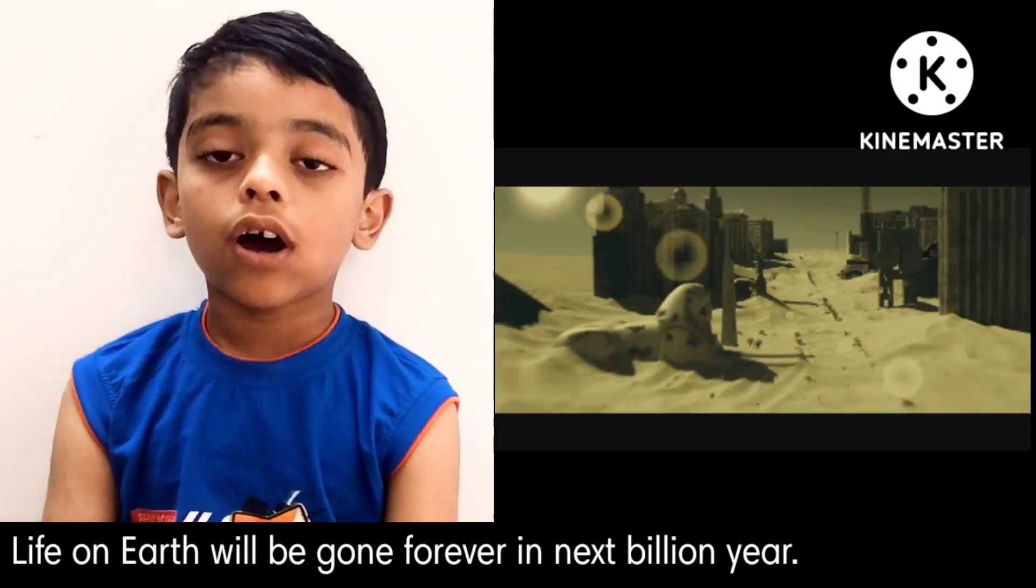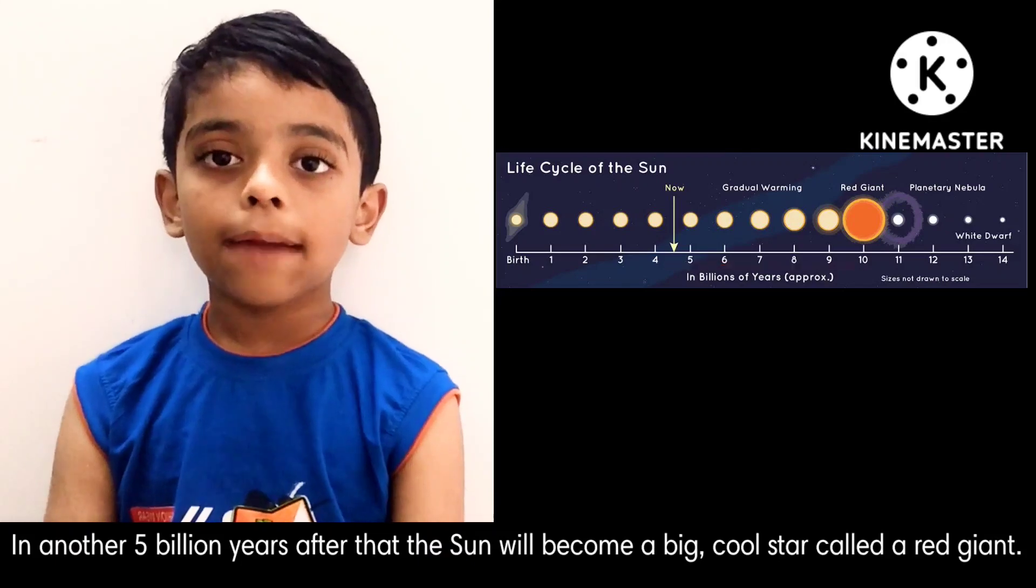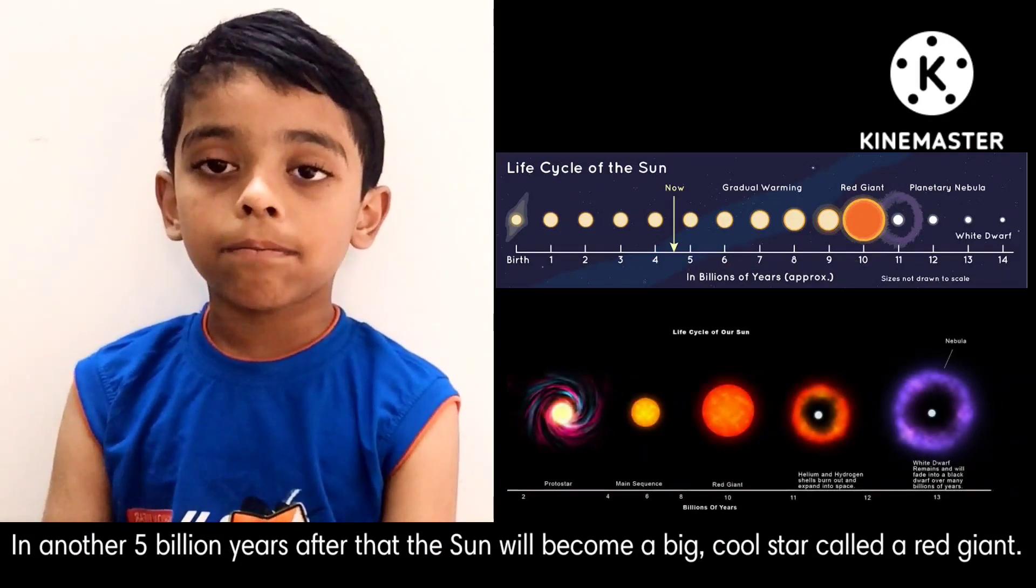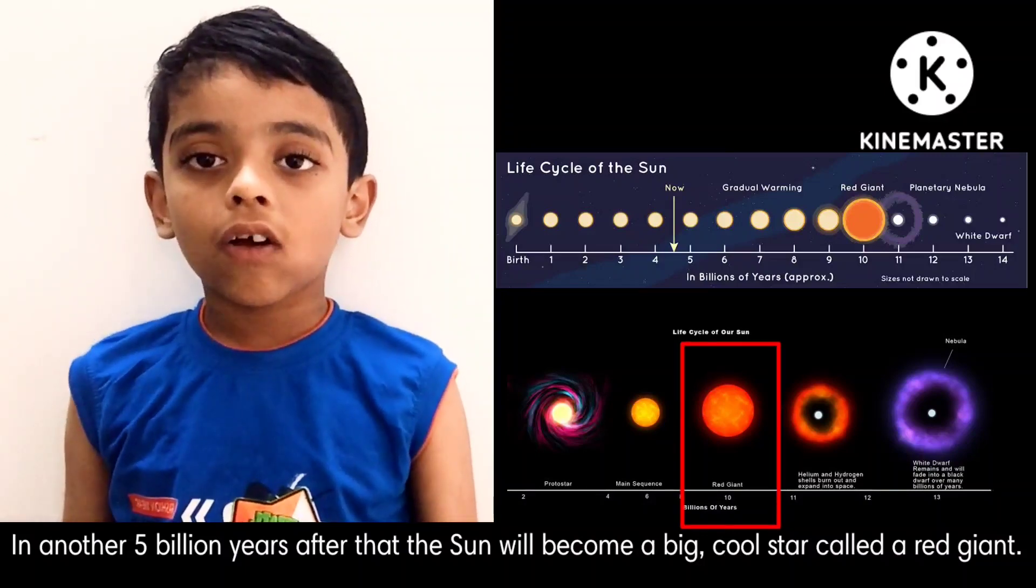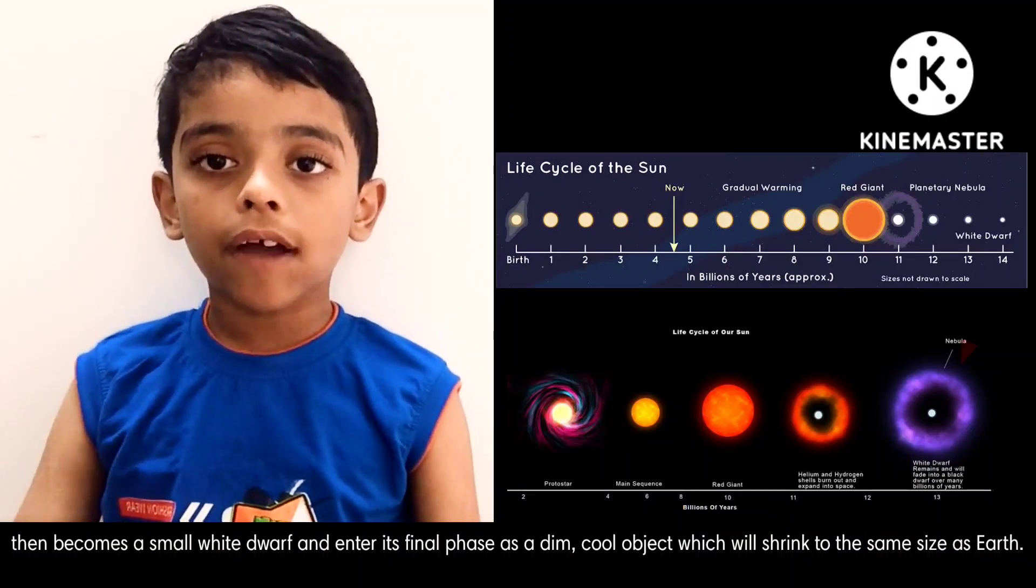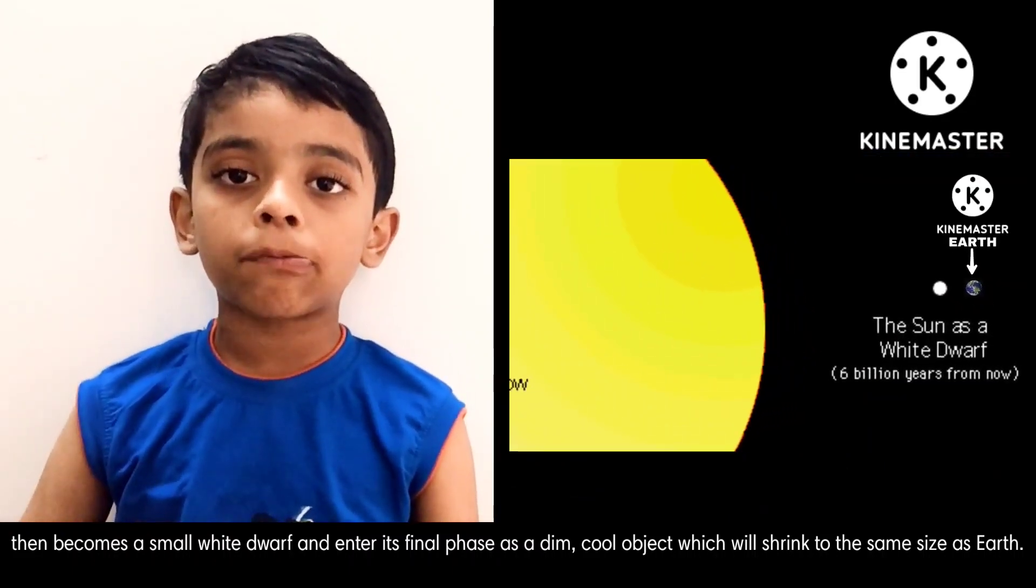In another five billion years after that, the Sun will become a big, cool star called red giant and then become a small white dwarf and enter its final phase as a dim, cool object which will shrink to the same size as Earth.